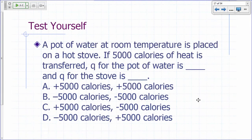Let's quickly check that concept. A pot of water at room temperature is placed on a hot stove. Let's say 5,000 calories of heat is transferred. Q for the pot of water is blank, and Q for the stove is blank.